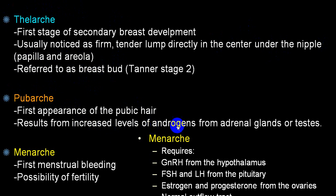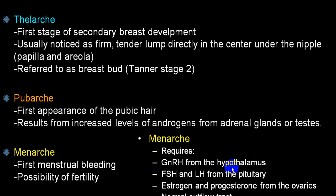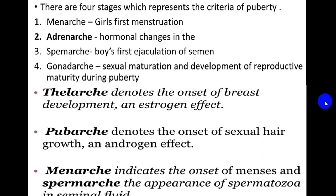Once there is an appearance of pubic hair, we call it pubarche — this is because of increased levels of androgens from adrenal glands and testes. The first menstrual bleeding is called menarche, and chances of fertility start. For menarche, you require gonadotropin-releasing hormone from the hypothalamus, which stimulates the pituitary to produce FSH and LH, which stimulate the ovary to produce estrogen and progesterone, with a normal outflow tract. In males, the first ejaculation of semen is called spermarche.